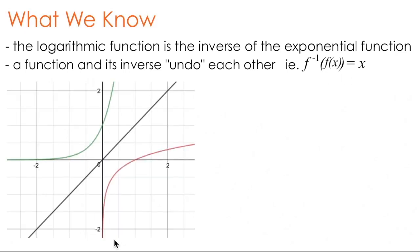If you represent a function and its inverse graphically, you can see that one function is a reflection of the other over the line y equals x, which explains why you get x when you substitute a function into its inverse, or vice versa.